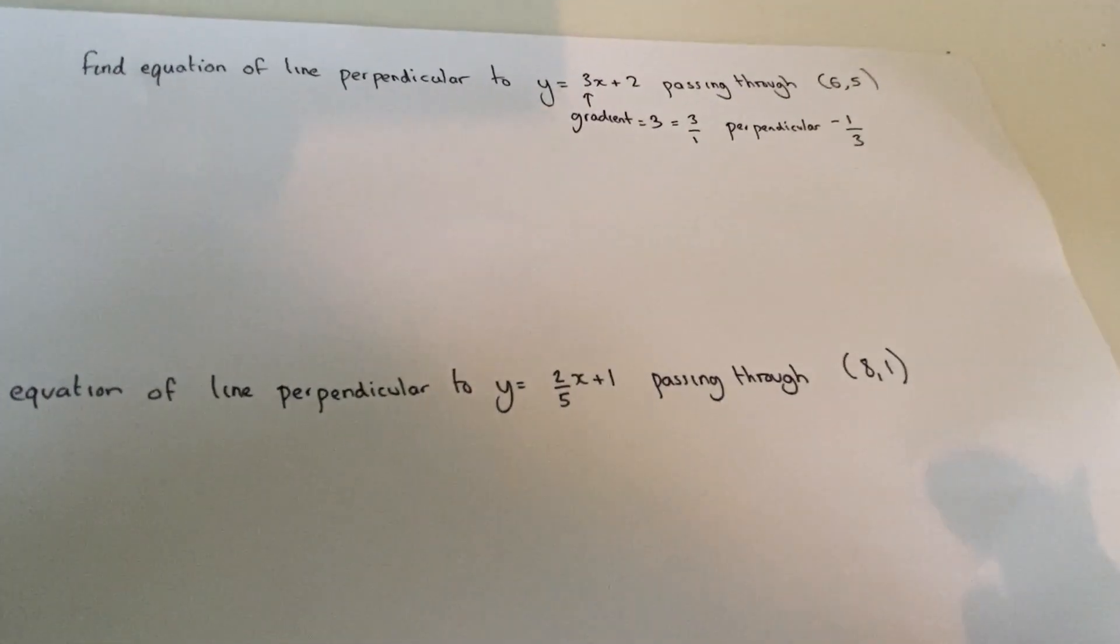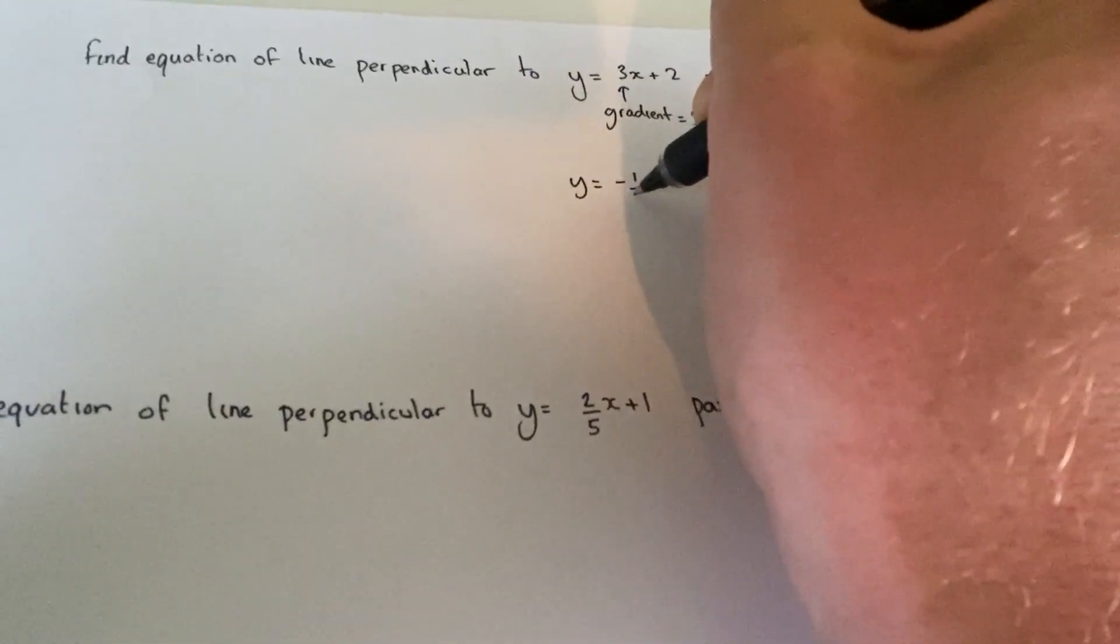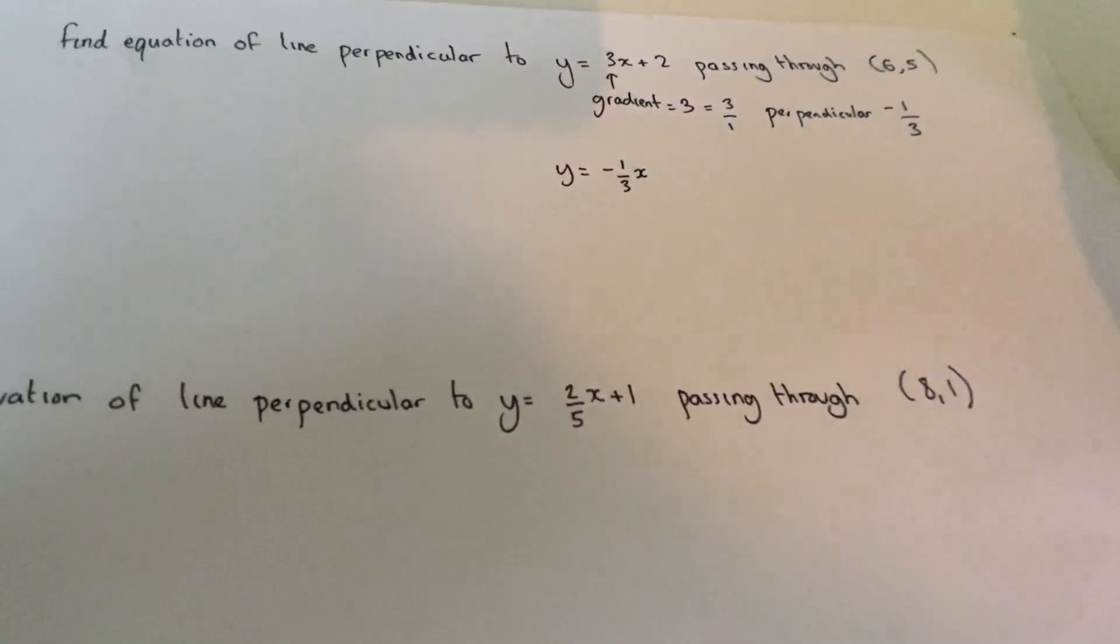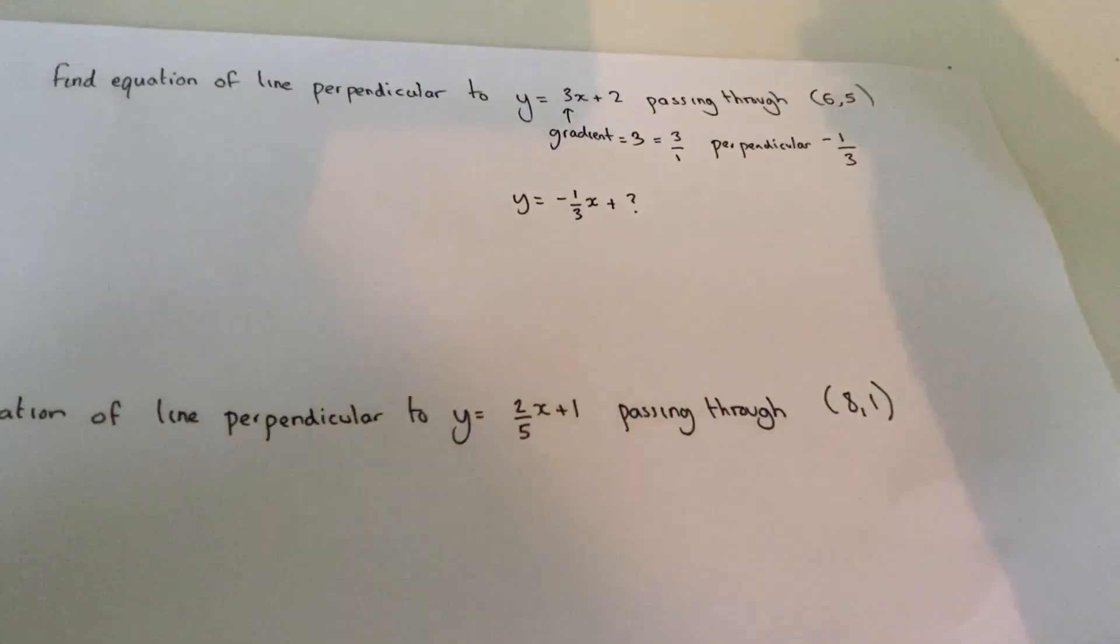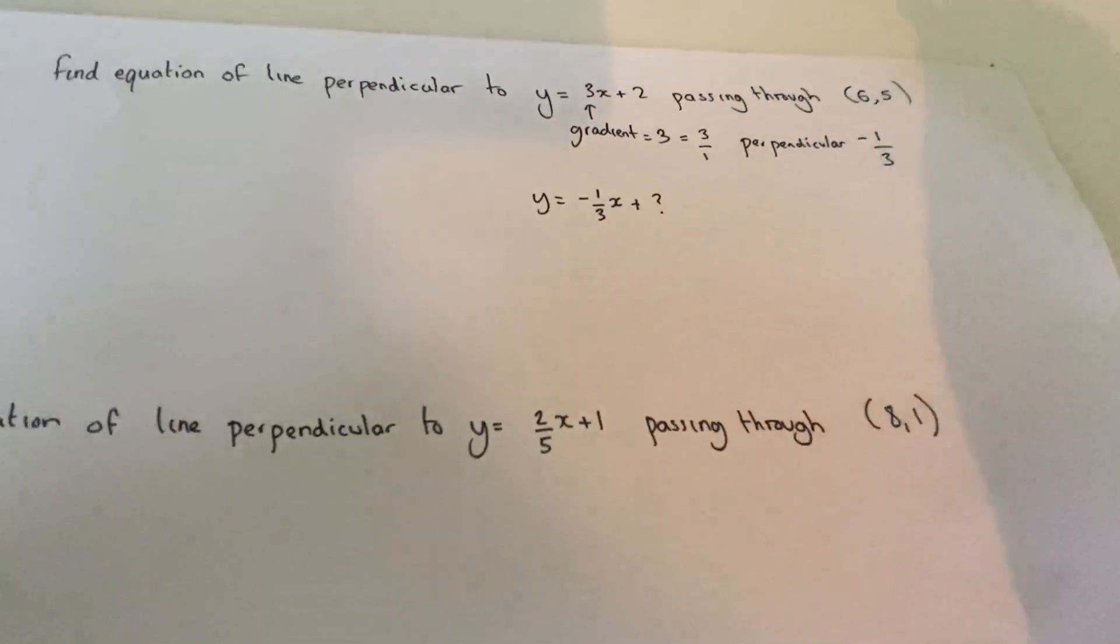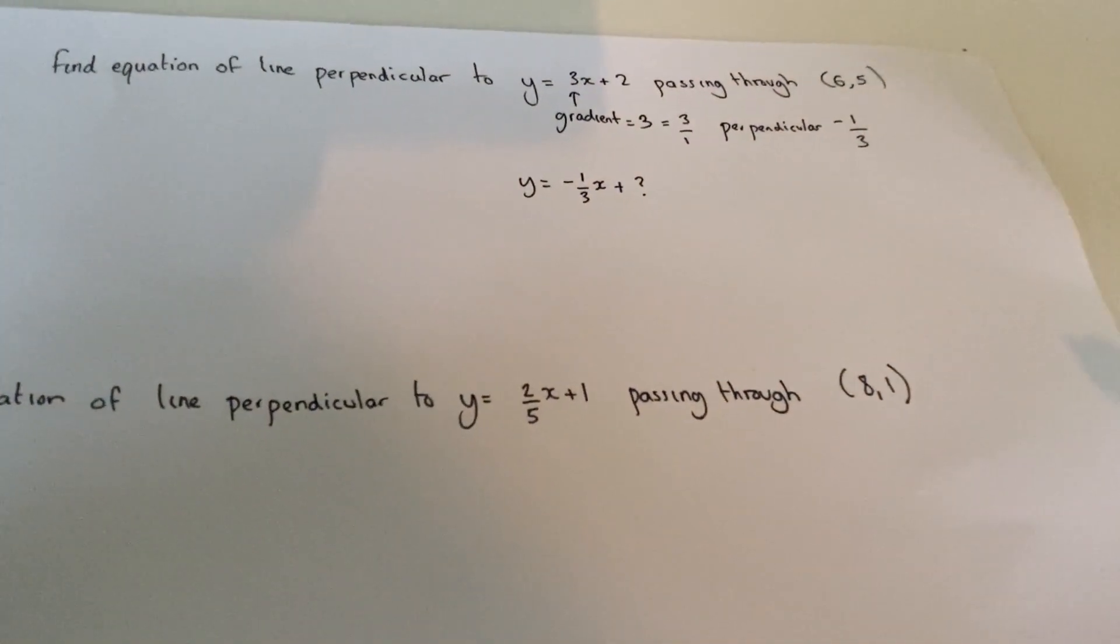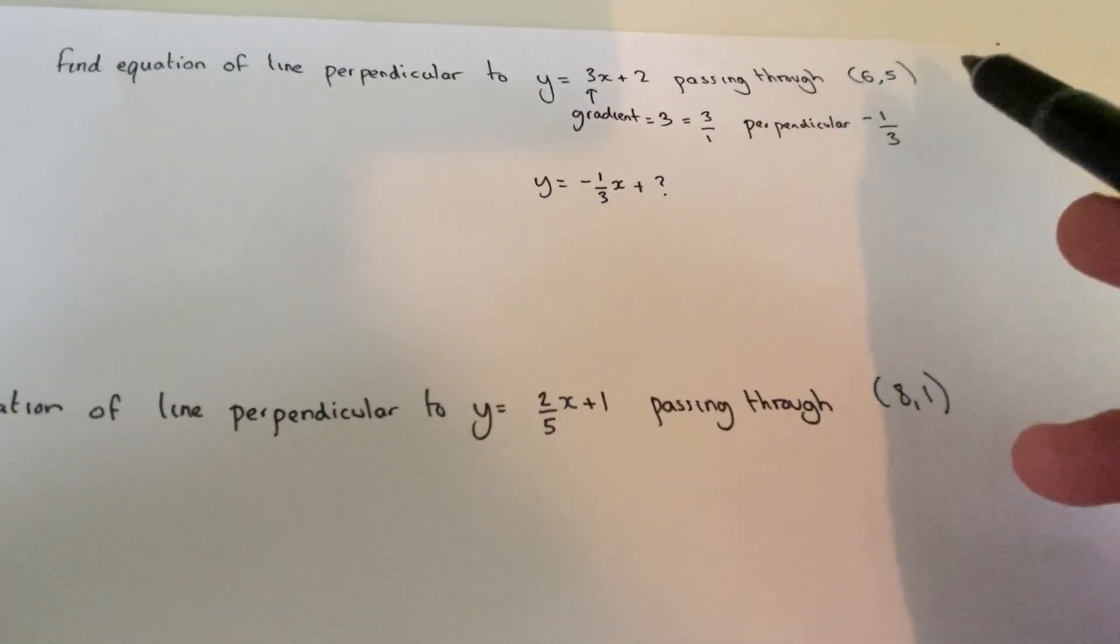So that means that our new line is y equals minus a third x. But the y-intercept changes. It was plus 2. It's now a new y-intercept because we have a new coordinate which is 6, 5. Now this equation has got to work for the coordinate 6, 5.